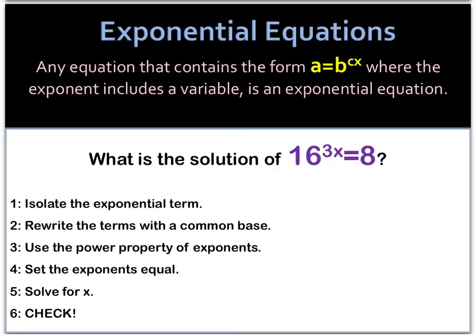One of the types of exponential equations that we will encounter are the types that we can rewrite the bases so that they are the same number, and then we'll just set the exponents equal to each other. In this case, 16 and 8 can both be written as a base of 2, so 16 is 2 to the 4th power and 8 is 2 to the 3rd power.